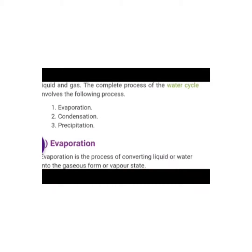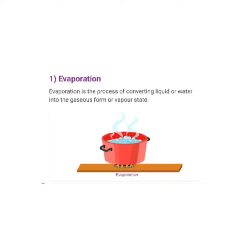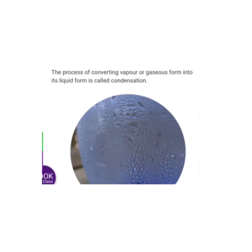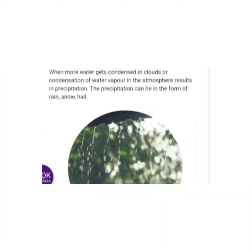The steps of the water cycle are: evaporation, condensation, and precipitation. Evaporation is the process of converting liquid water into a gaseous form or vapor state. Condensation is the process of converting water vapors or gaseous form back into liquid form.